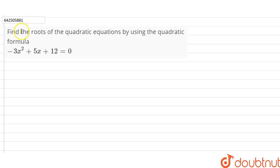Hi students, our question is: find the roots of the quadratic equation by using the quadratic formula — minus 3x square plus 5x plus 12 is equal to 0.